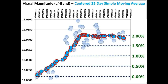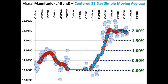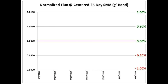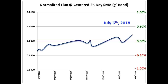Now let's take a look at the corresponding normalized flux light curve from June 7th to July 7th. This is the nominal flux centered at the 25-day simple moving average for June 7th, June 8th, the 10th, the 12th, the 19th, the 22nd, the 23rd of June, the 24th, the 1st of July, the 3rd, the 6th, and finally the 7th of July.